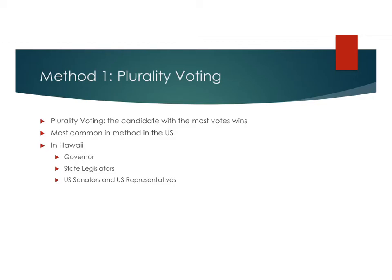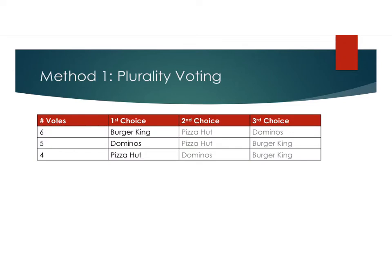In Hawaii, we use this for the governor, state legislators, U.S. senators, and U.S. representatives. So using plurality voting, who wins? If we're just looking at first choice, then Burger King wins, because they have six votes, compared to the five that Domino's has and four that Pizza Hut has.